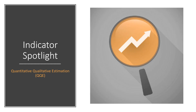This time around, we're talking about the Quantitative Qualitative Estimation — we'll just go with the QQE indicator from here on. This is an offspring from Wilder's famous Relative Strength Index, or the RSI indicator.